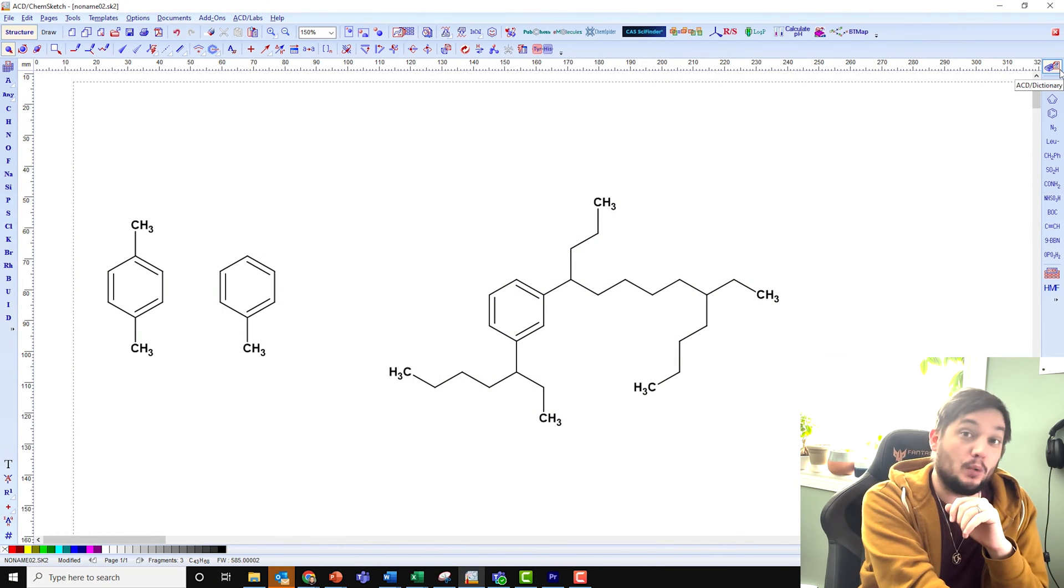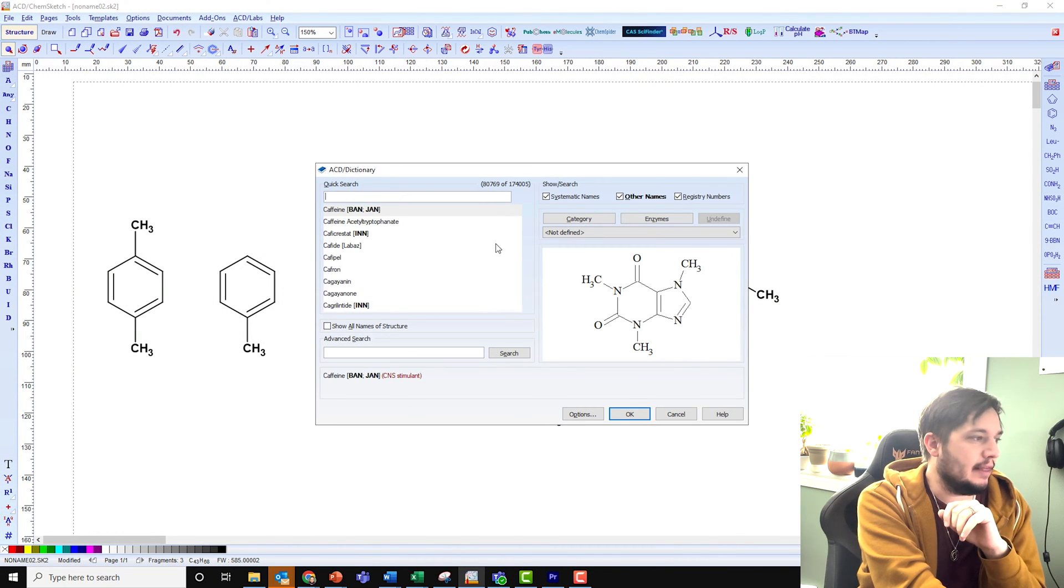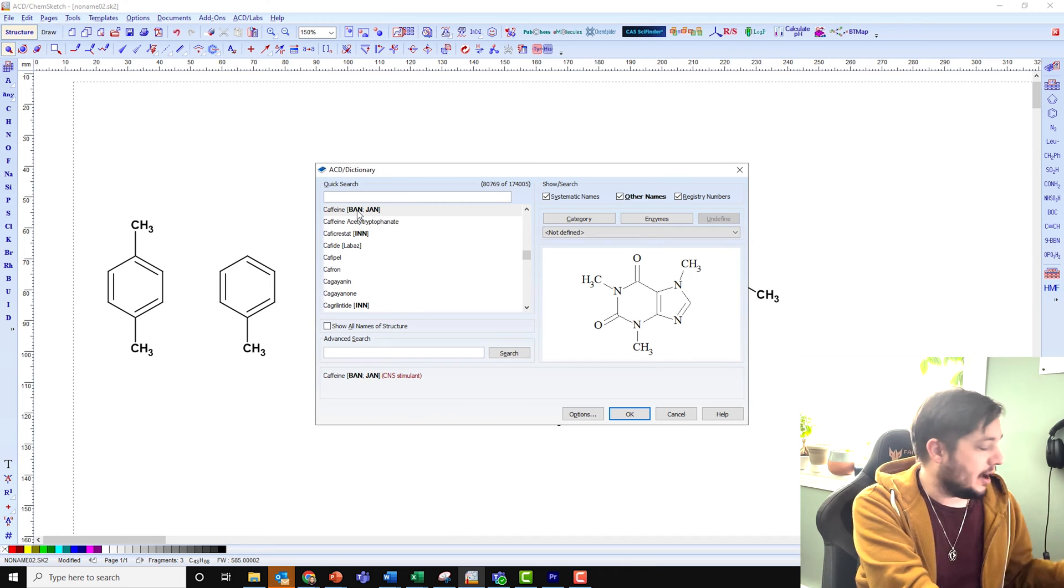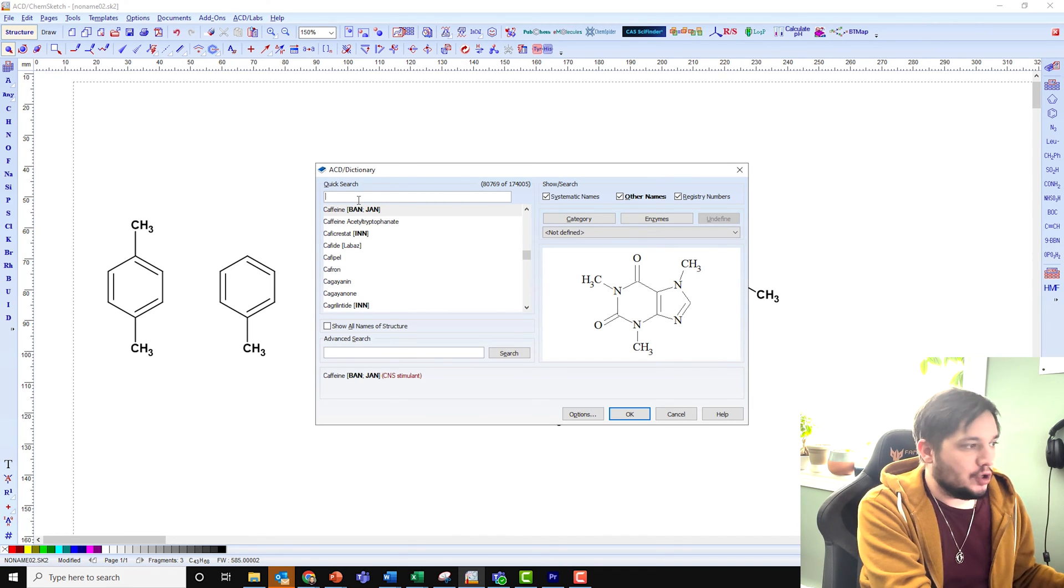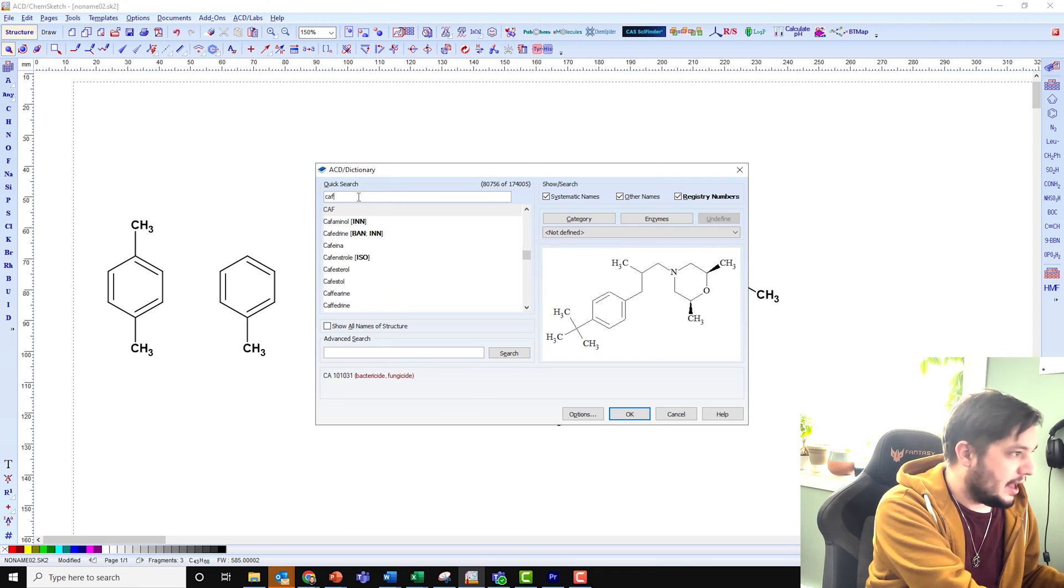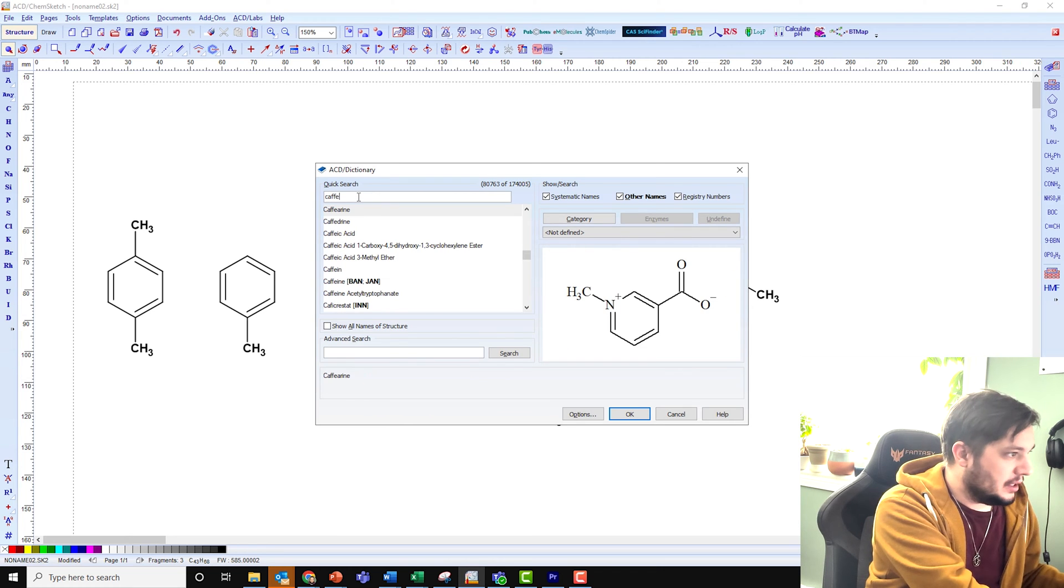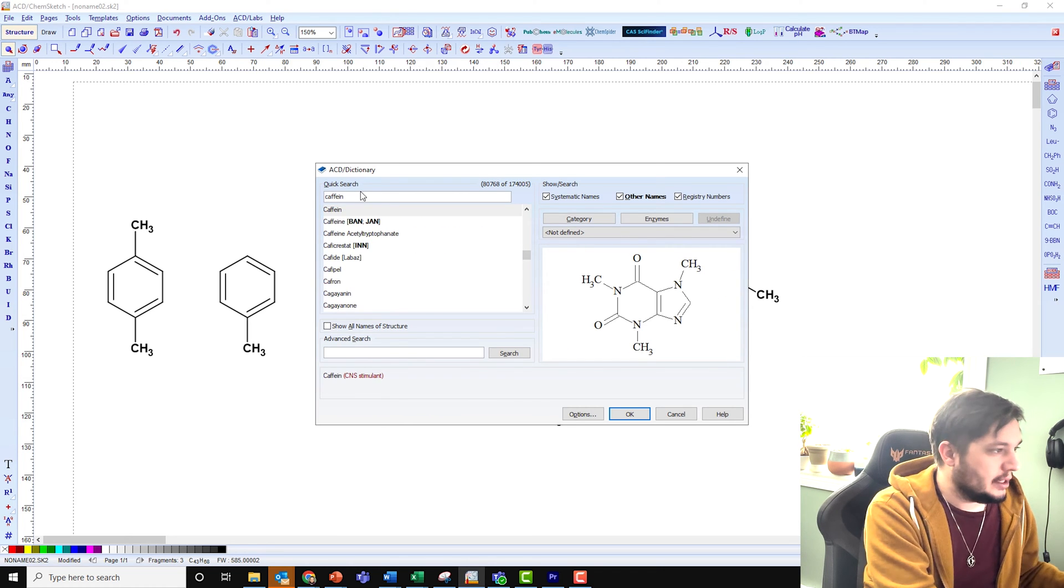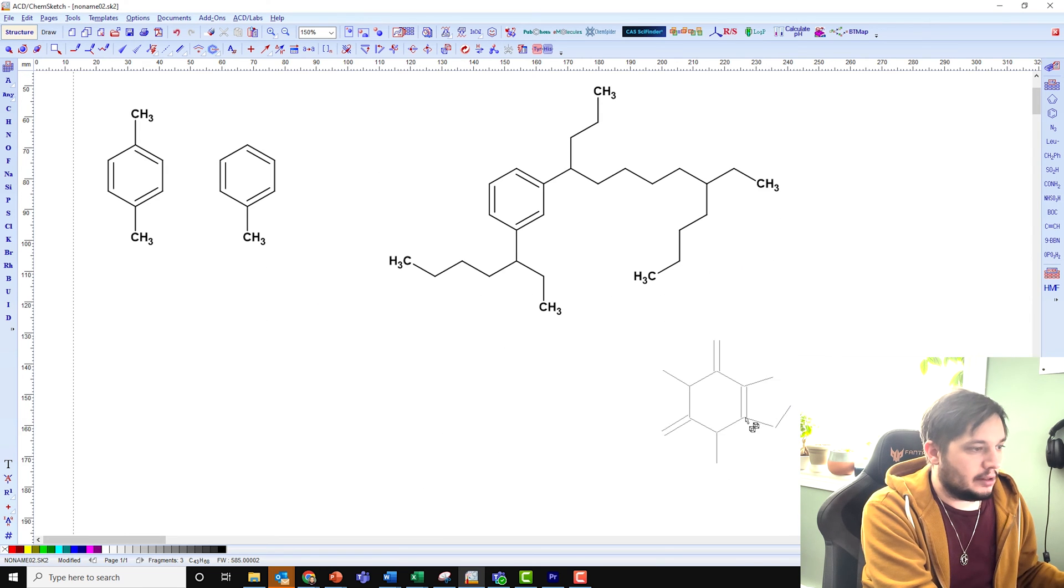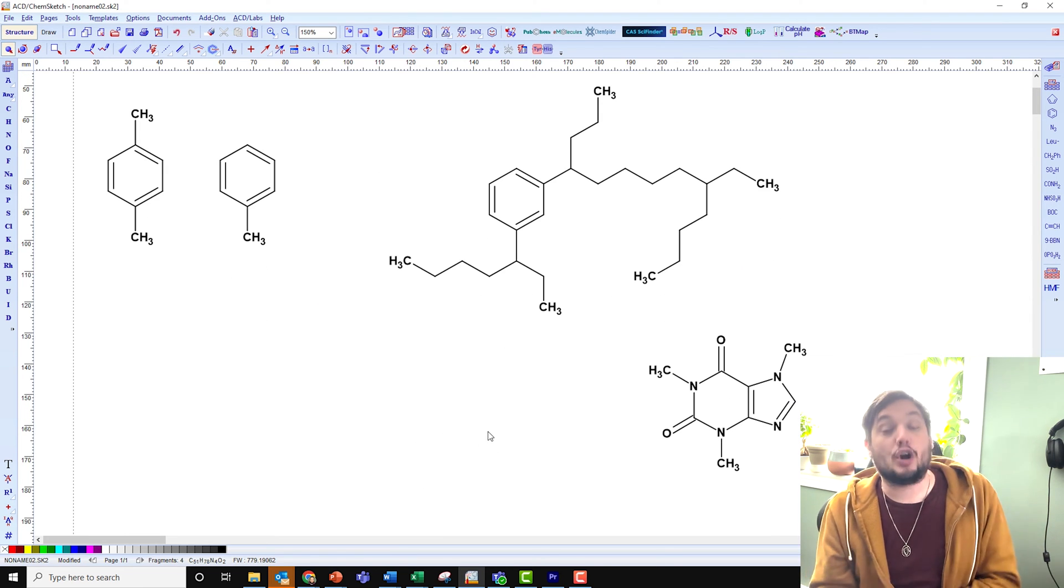Here, we go to the ACD dictionary up in the right hand corner here. And then we can look things up. Right now, I have caffeine that's pulled up in here, but you can search by name as well. So, okay, that is how you get it. Had it open from before, grab it, put it in and huzzah, you know, just drop it into your document.